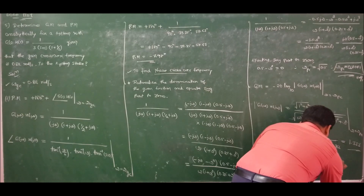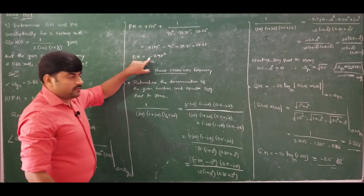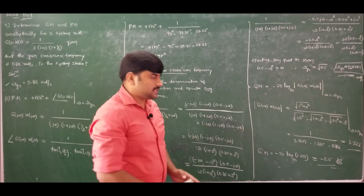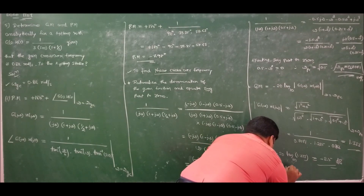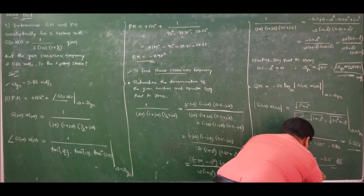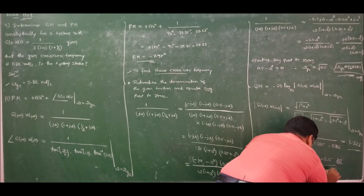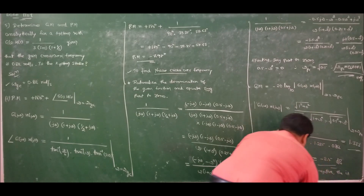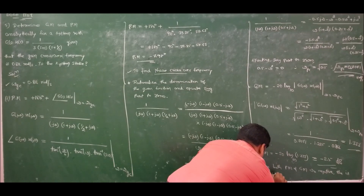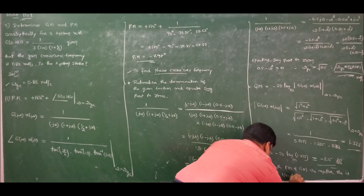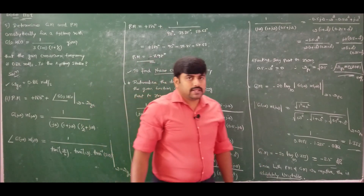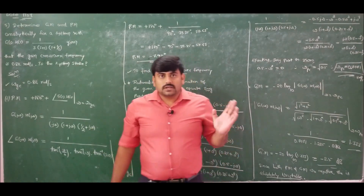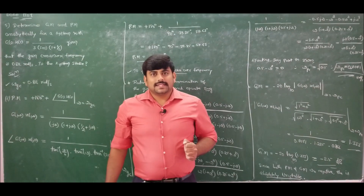Gain margin = −20 log₁₀(1.333) = −2.497 dB ≈ −2.5 dB. Since both phase margin and gain margin are negative, the system is absolutely unstable. This completes the analytical solution for problem number 5 on Bode plot. Thank you all.